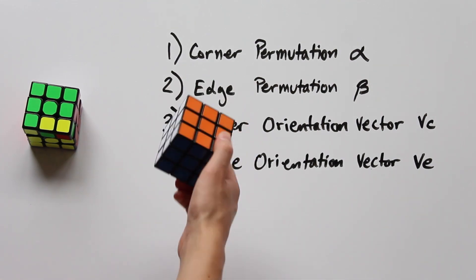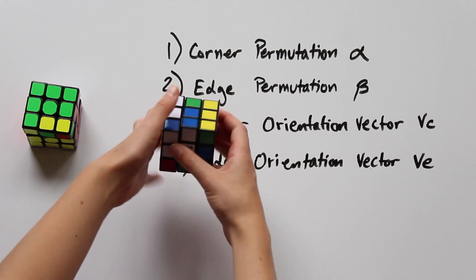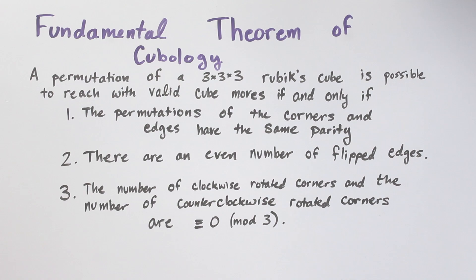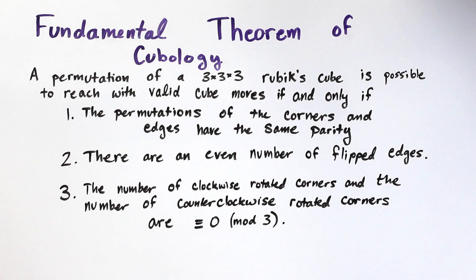We then looked at the properties of the identity permutation which are preserved under all of the face moves of the cube. This gave us the fundamental theorem of cubology.